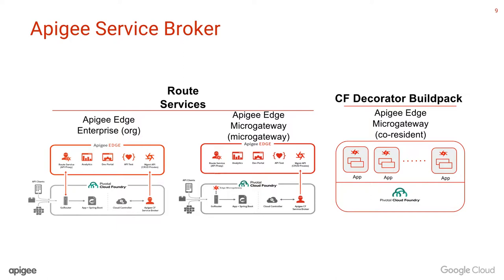How the org plan works is that traffic comes into the Go router, which is the router that sits in front of Cloud Foundry and all your applications. It sends the traffic to Apigee Edge, whether that be on-prem or in the cloud, and it goes through the normal flow for requests coming into Apigee Edge, whether that be spike arrest or quota. After that, it gets returned back to the Go router, which redirects it back into the application running inside Cloud Foundry, and then back out and into Apigee Edge, and then back out to the end user.